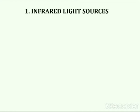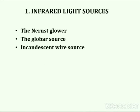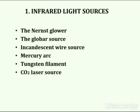Different types of light sources are used in infrared spectrophotometers. These include the Nernst Glower, the Globar source, incandescent wire source, mercury arc, tungsten filament, and CO2 laser source. Infrared sources consist of an inert solid that is electrically heated to a temperature between 1500 to 2200 Kelvin, and the heated material then emits infrared radiation.